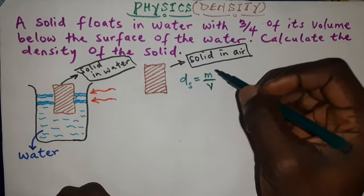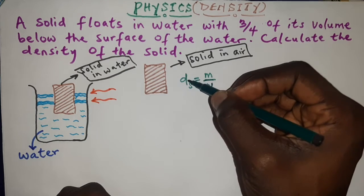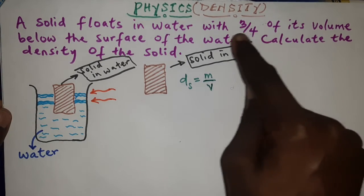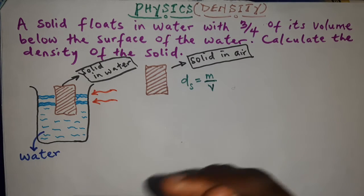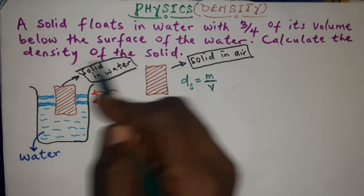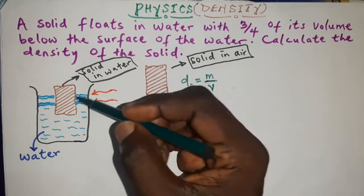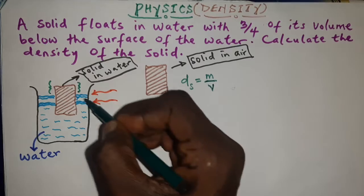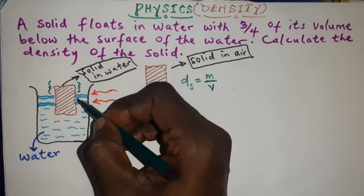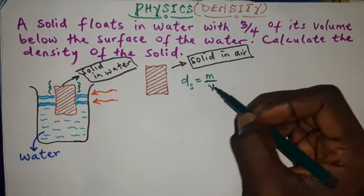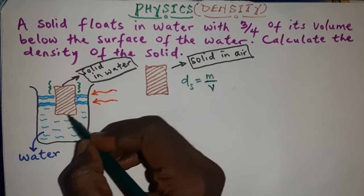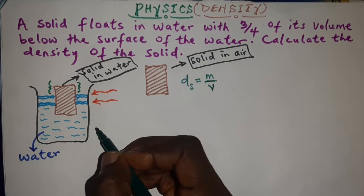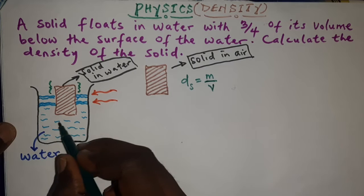In this case it would be very hard to get the volume and the mass directly, so how do we get the density of the solid? We have another piece of information: we know from the question that the solid is immersed in water, and only 3/4 of its volume is below the surface of the water. So we can think of how to use the density of water to help us.